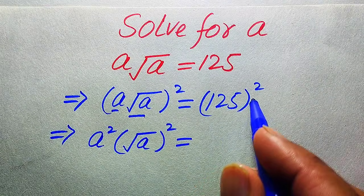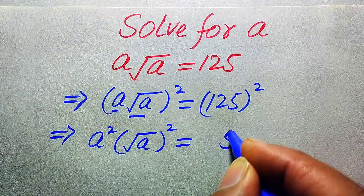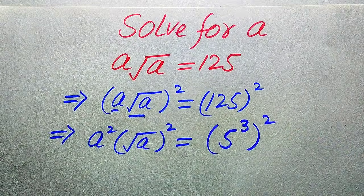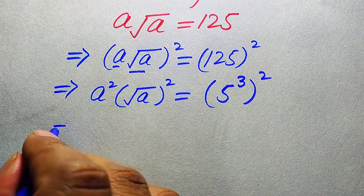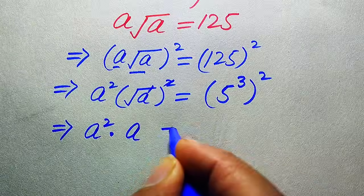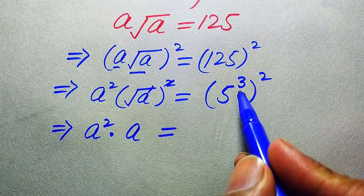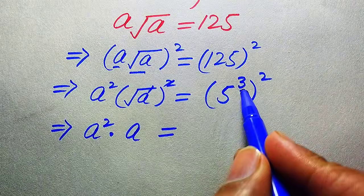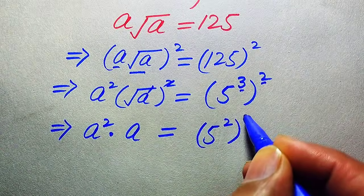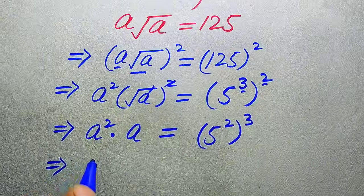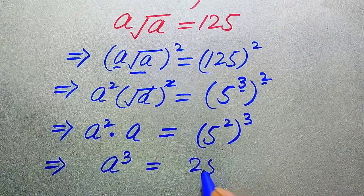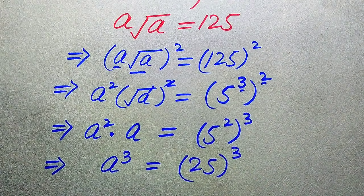We write 125 as 5 cubed, so we have 5³ whole squared. Further simplifying, the square and square root cancel, leaving just a, so we get a² times a equals (5²)³. When we multiply a² by a it becomes a³, and 5² becomes 25, so we have a³ equals 25³.